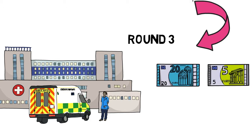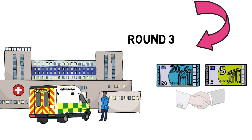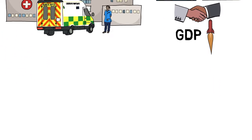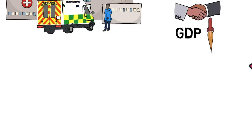He spends half his income — 25 euro — on healthcare, which is an addition to GDP. That's an extra transaction in round three, which means GDP increases yet further. Again, it's the same money recirculated around the economy generating additional transactions each time it is used.